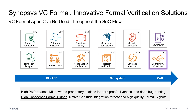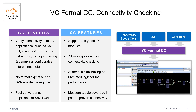The VC Formal CC app is one of the dozen apps in the VC Formal family. With innovative formal technologies, VC Formal apps can be used throughout the SOC design and verification flow and deliver high-performance and high-confidence formal sign-off. The VC Formal connectivity checking app verifies connectivity in the SOC I/O, blockchain muxing, demuxing, configurable interconnect, and many other areas of your design. It supports encrypted IP modules and uses automatic blackboxing of unrelated logic for best-in-class performance.